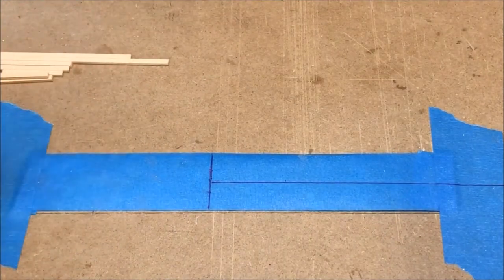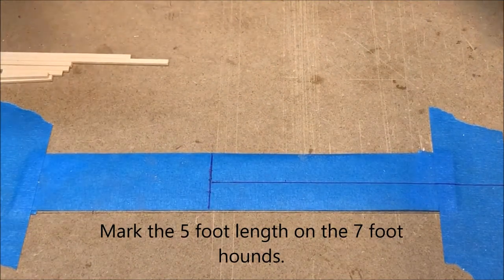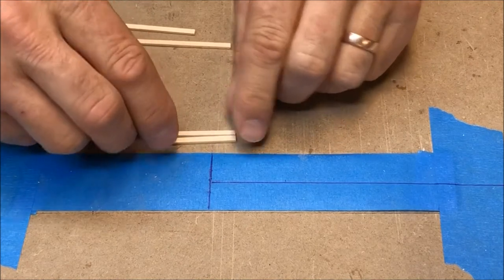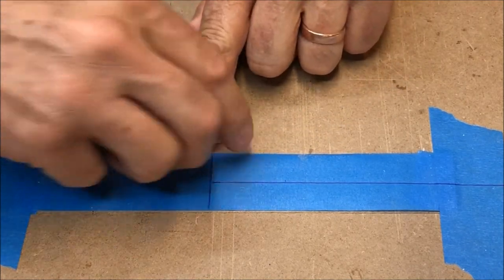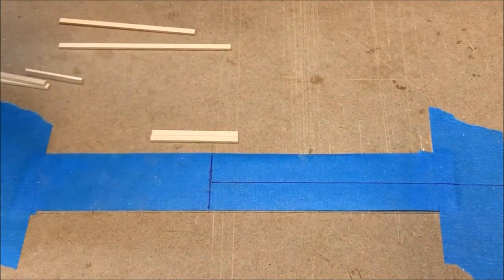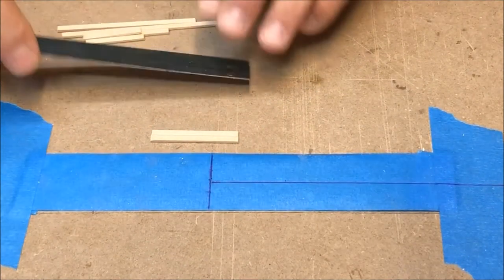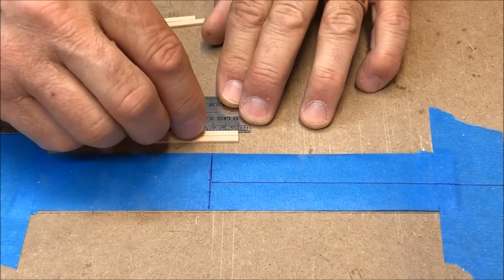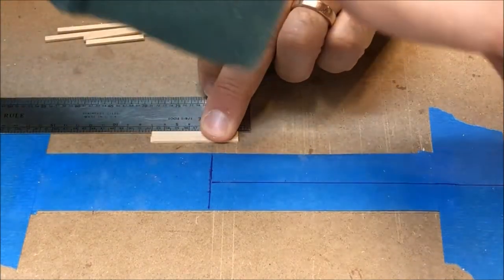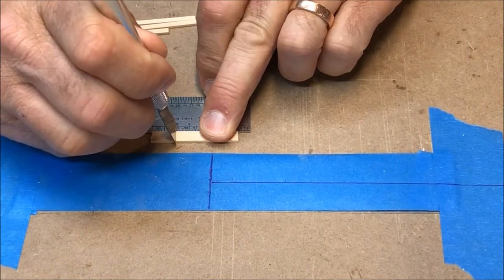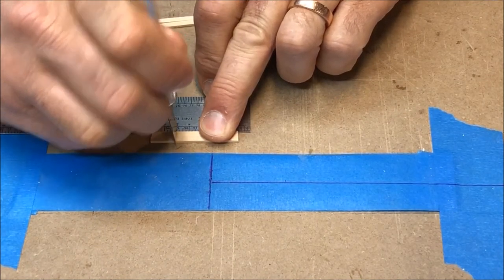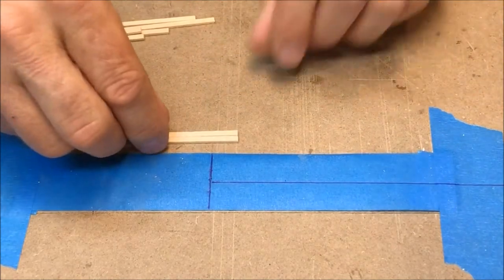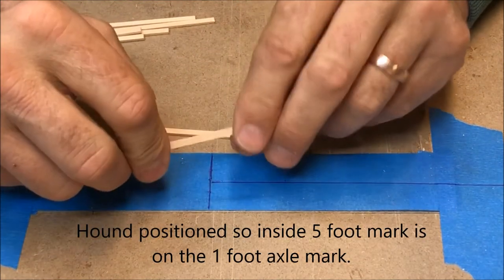The next thing we need to do is we need to take the hounds for the front which are the seven foot long sections and we need to make a mark five foot back from one end. Remember on the rear suspension our hounds were five feet long. We still want to have that same five foot mark on this but we need two feet of the hound to project beyond the front axle. So I'll just make a little mark here, a little indentation with my exacto chisel for my five foot mark.